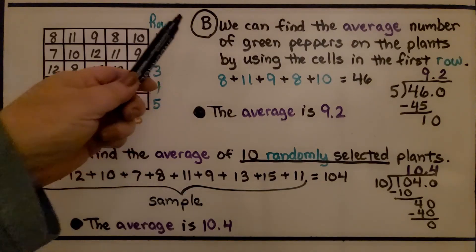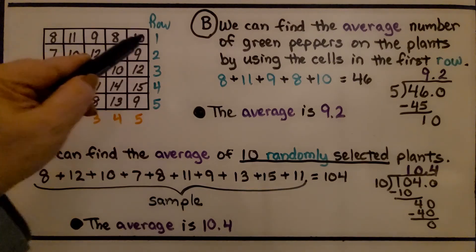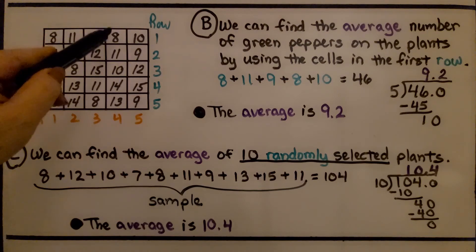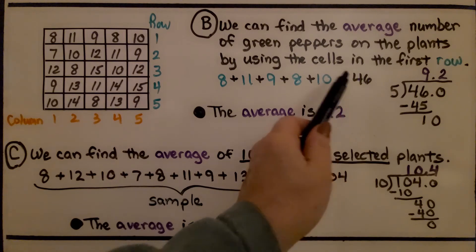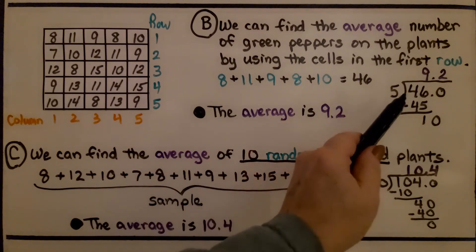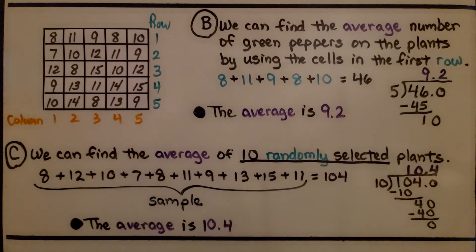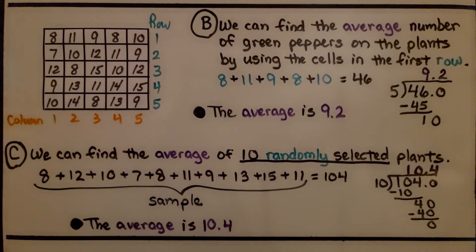For Part B, we find the average number of green peppers using the cells in the first row only. We add 8 plus 11 plus 9 plus 8 plus 10, which equals 46. We have 5 addends, so we divide 46 by 5 and get 9 and 2 tenths. The average is 9.2.